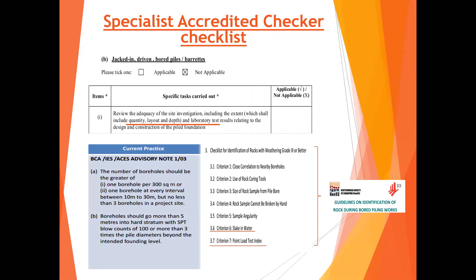The first thing BCA wants to ensure is the adequacy of SI — meaning: is the number of boreholes enough, are the locations correct, is the depth sufficient, and are the laboratory tests adequate? Now you see the BCA advisory note, which I already shared with you earlier.